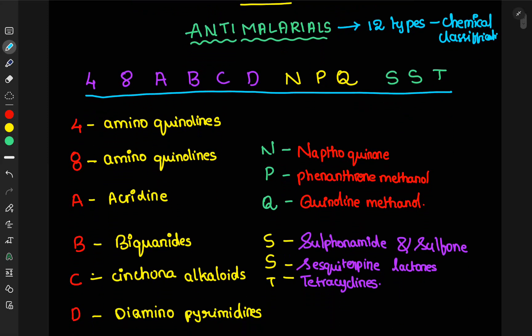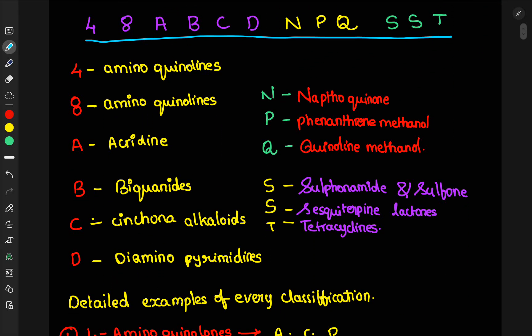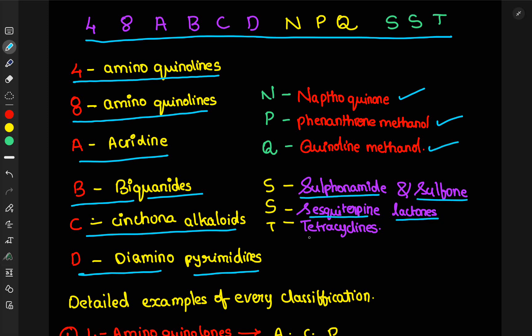We will see each one of them, what it denotes. 4 means 4-aminoquinolines. That means amino group is at the 4th position in the quinoline. Then, second one, 8-aminoquinolines. Here, amino group will be at the 8th position. Acridine, biguanides, cinchona alkaloids, diaminopyrimidines, naphthoquinone, phenanthrene-methanol, quinoline-methanol, sulfonamides and sulfones, sesquiterpenes lactones, tetracyclines.